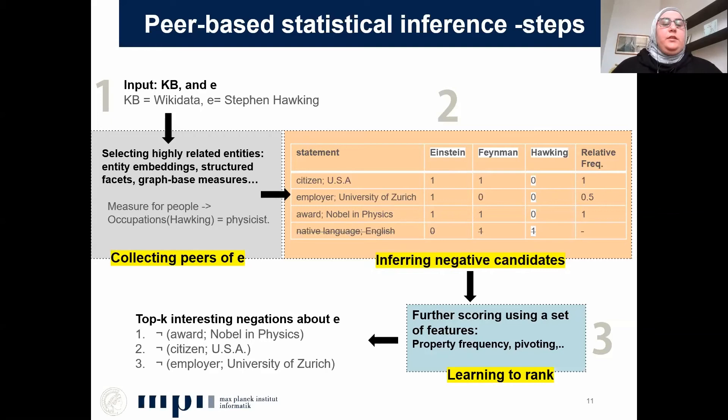In step two, we collect statements about every member of the group, counting the relative frequency of every statement within the group, and also dropping any statement that is valid for Hawking — like that he speaks English. On top of the relative frequency, we do further scoring using additional supervised and unsupervised features that we tune using a regression model. Finally, we output a ranked list of interesting negative statements about Hawking or any given entity.